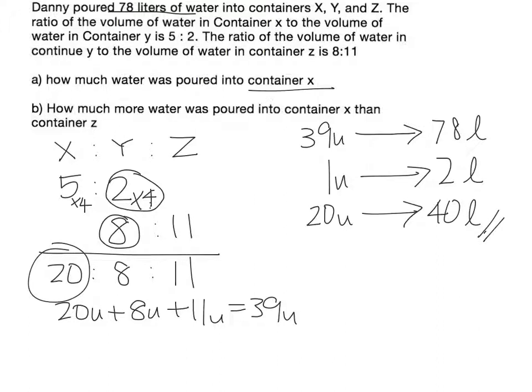And for part B, how much more water was poured into x than z? So x is 20, z is 11. So the more than amount would be 20 units take away 11 units, which is equal to 9 units.